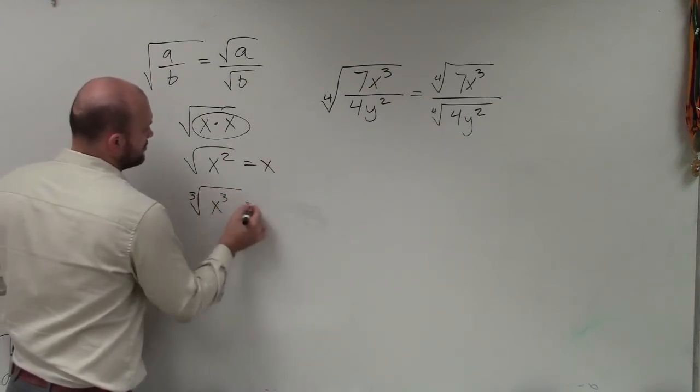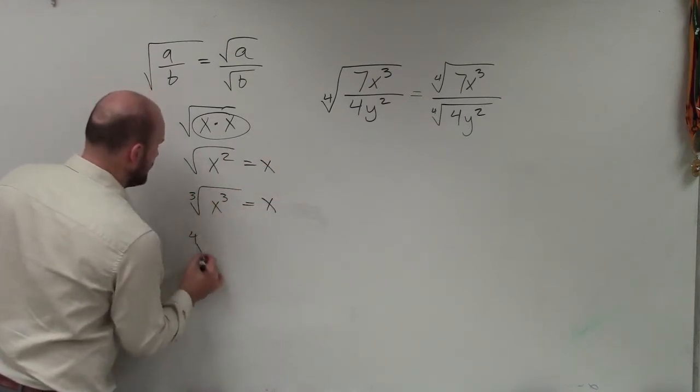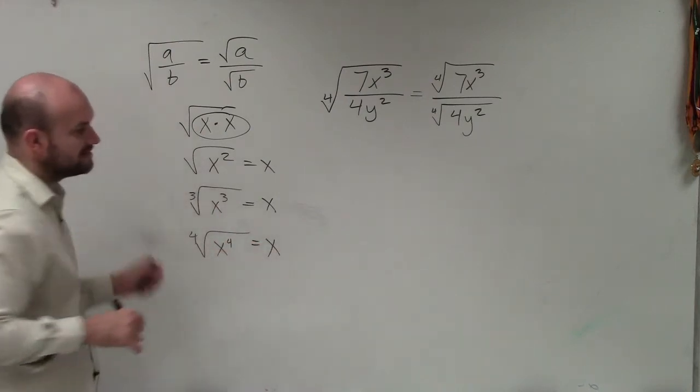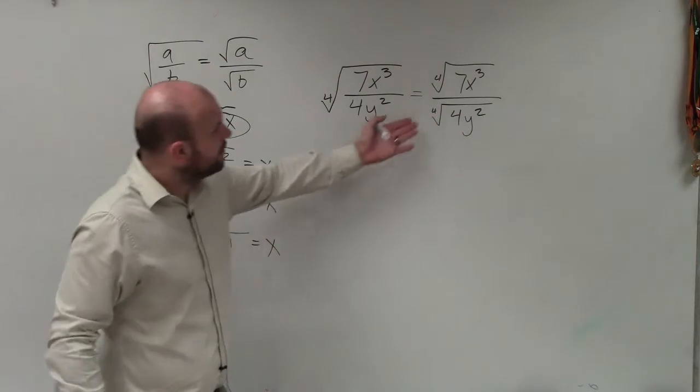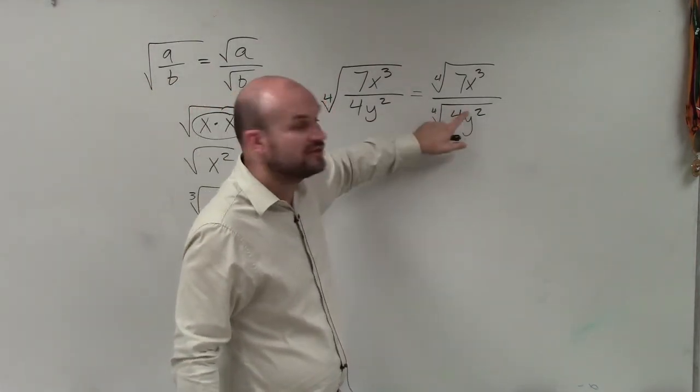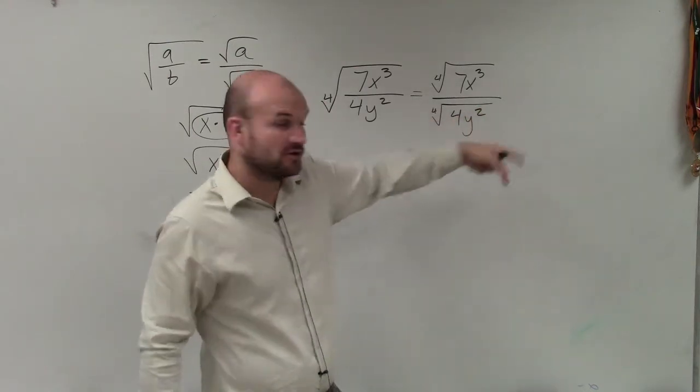The cube root of x cubed is just equal to x. The fourth root of x to the fourth is just equal to x. So therefore, if I want to get rid of the fourth root,